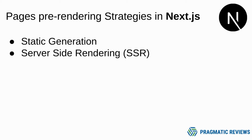There are two strategies to pre-render pages in Next.js, and these strategies depend on the approach we take to fetch the data. If we need to fetch the data at build time because the data required to render the page is available ahead of a user's request — for example from a headless CMS — we should apply the static generation strategy. If we need to pre-render a page whose data must be fetched at request time, then we need to use server-side rendering.